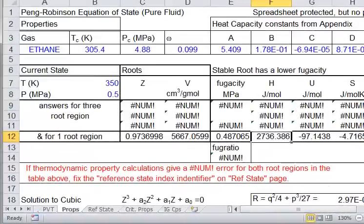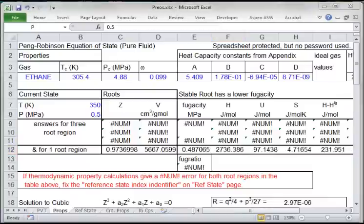And when I go back, I've got values. You can see the enthalpy is 2736, and the entropy is minus 4.716. We'll use those values later in this video.